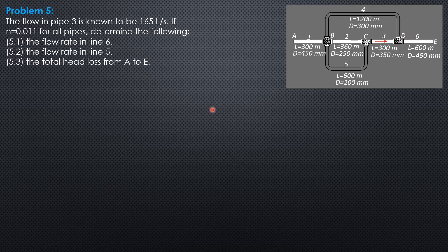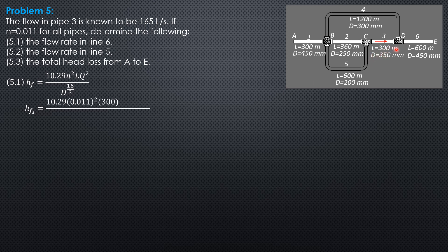The procedure for analysis uses the formula: HF equals 10.29 N² L Q² over diameter to the 16/3 power. Computing the head loss in line 3: HF3 is 10.29 times 0.011² times 300 times 0.165² over 0.35 raised to 16/3, with diameter 0.35. So the head loss in pipe 3 is 2.747 meters.